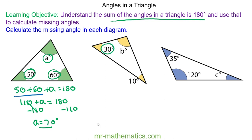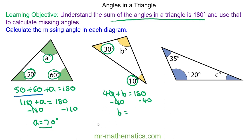Question B: we can add the 30 and the 10 together and they will make 40 degrees. Added to angle B will equal 180. We can take away 40 from both sides, so angle B will equal 180 take away 40. Angle B will be 140 degrees.